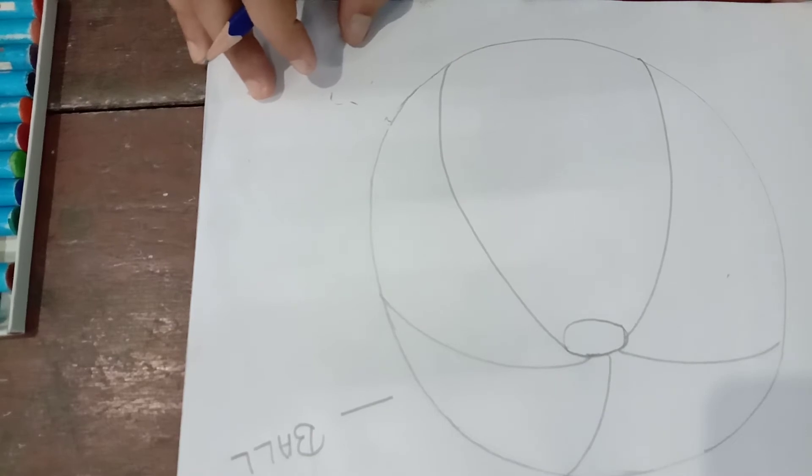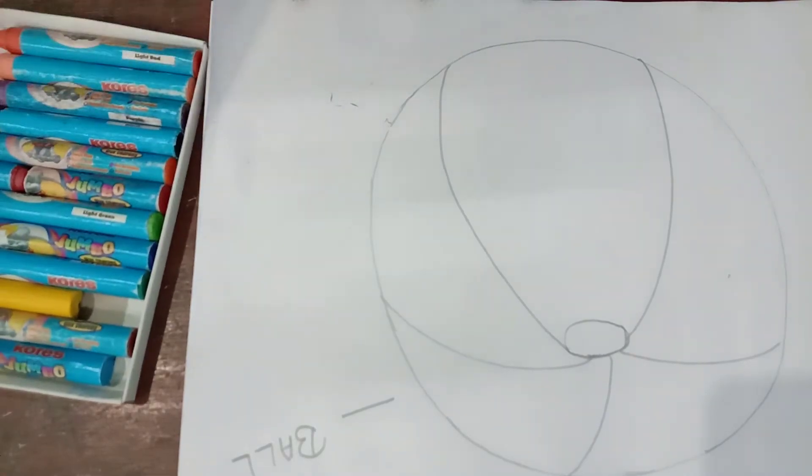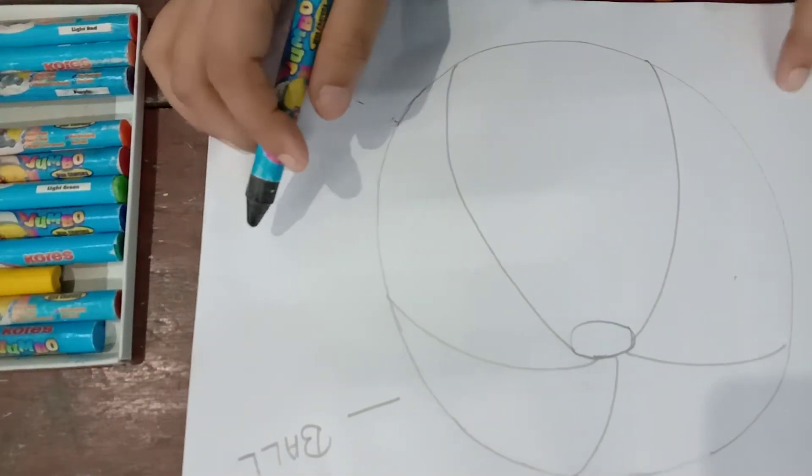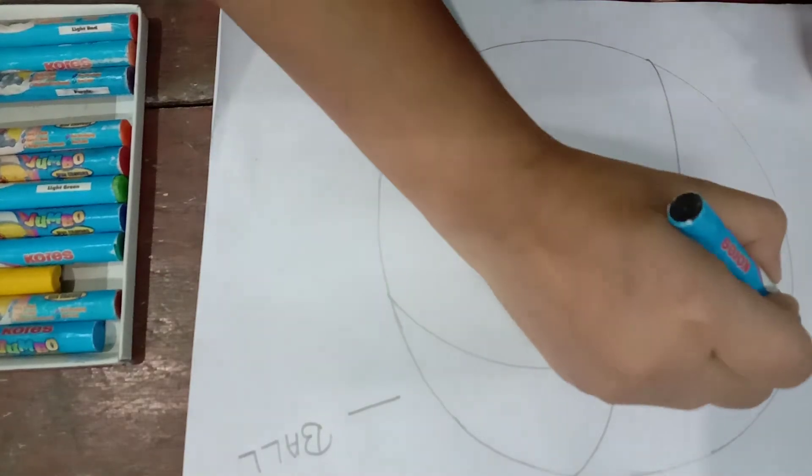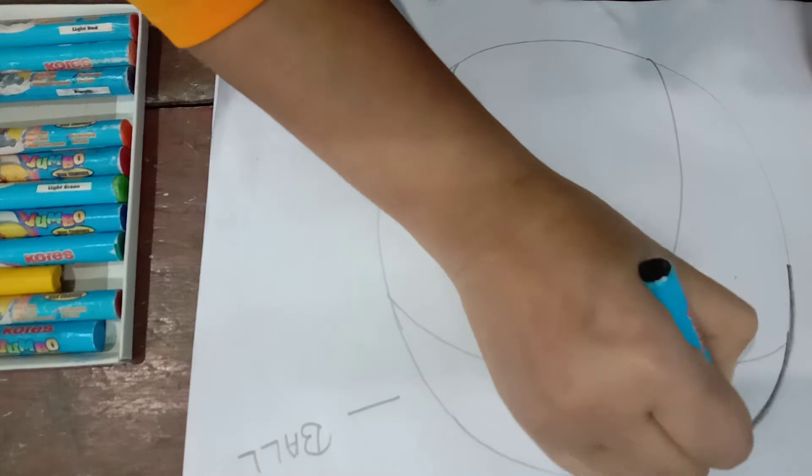Let's start to color this ball. Take out your color from the box. First of all, you will take black color. Let's start to color, or making outline. First of all,